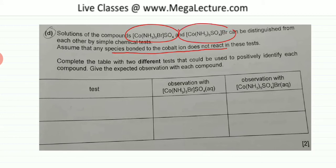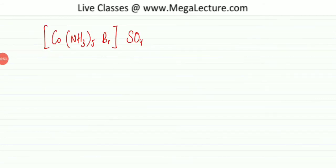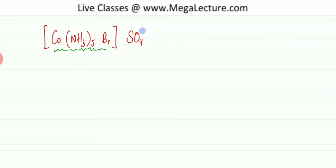These are complex ions, so let's carefully analyze what the structure is. The first compound is cobalt with 5 NH3s and Br — that is your complex ion, and it probably has a charge. SO4 has a charge of minus 2, so the complex ion probably has a charge of plus 2.